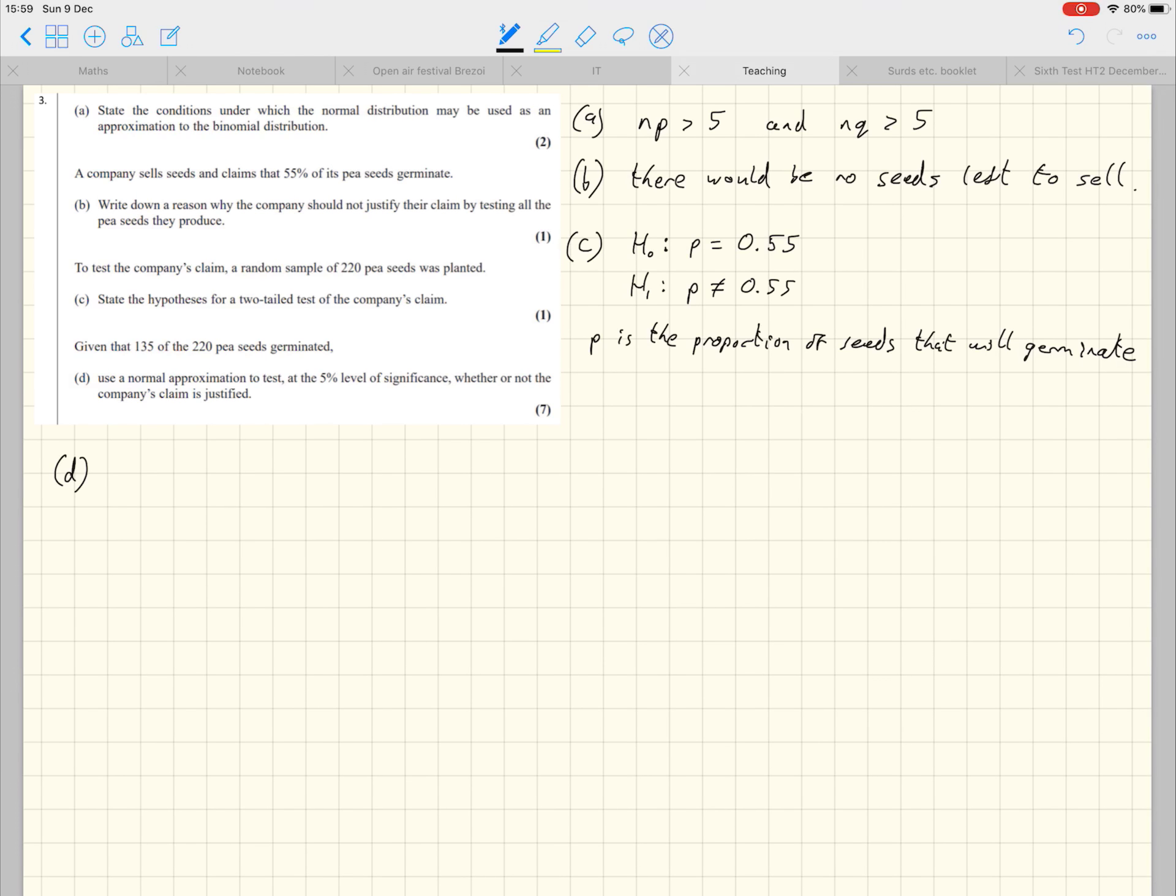Okay, brilliant. So part D, let's crack on with that. So we're testing the 5% level of significance. Two-tailed test. Whether or not the company's claim is justified, that they claim that the proportion is 0.55. Let's define an X, which is binomially distributed.